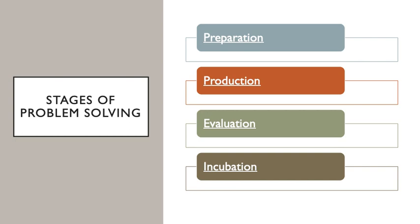There is disagreement amongst psychologists as to whether problem solving is done in qualitatively different stages or if these stages overlap. We'll discuss what are considered to be the stages of problem solving, starting with preparation. Preparation involves familiarizing yourself with the problem, the goal, and the givens. The correct solution can't be generated without an adequate understanding of the problem and the givens. Once a person feels prepared, they can move to the production stage, which refers to the generation of solution paths — brainstorming and listing all possible ways of getting to the goal state.